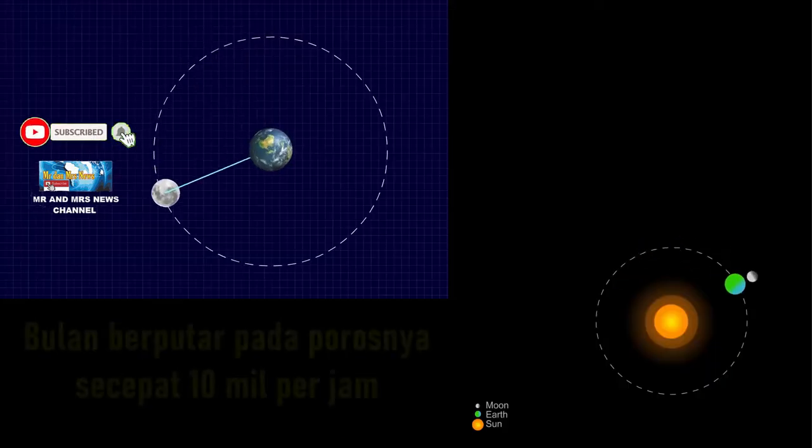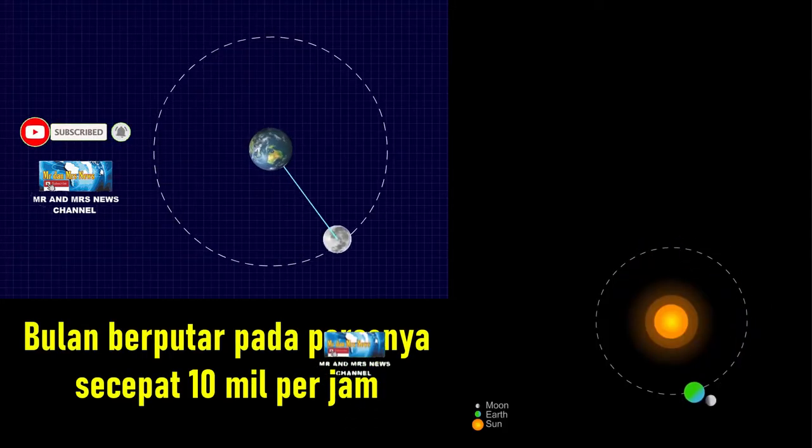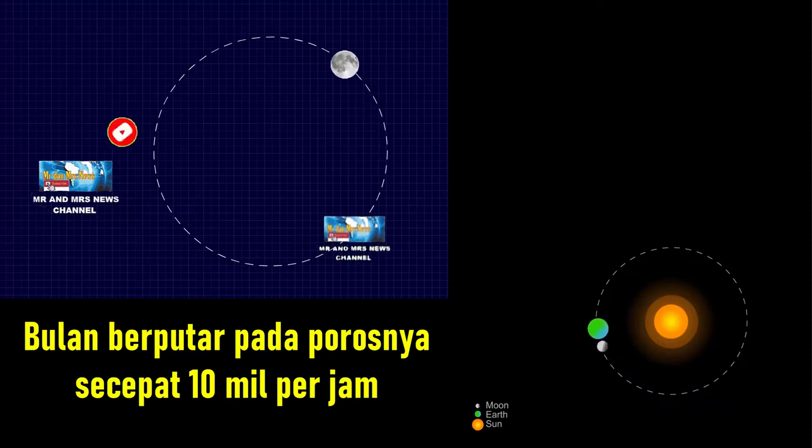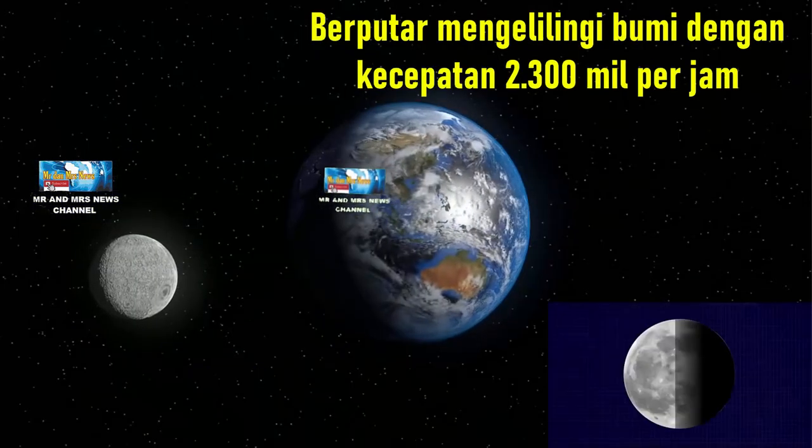Bulan berputar pada porosnya secepat 10 mil per jam dan berputar mengelilingi bumi dengan kecepatan 2.300 mil per jam.